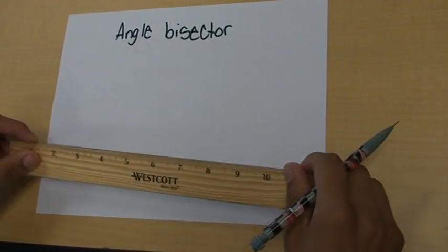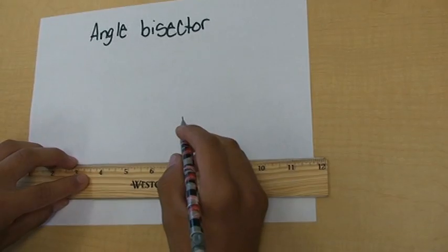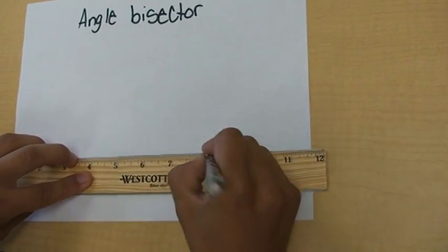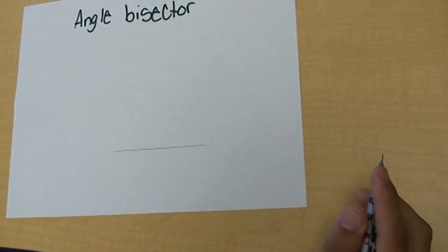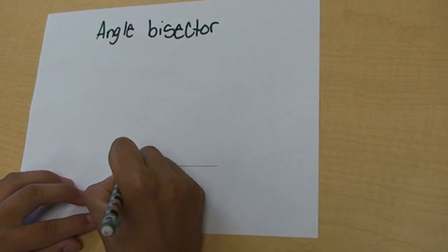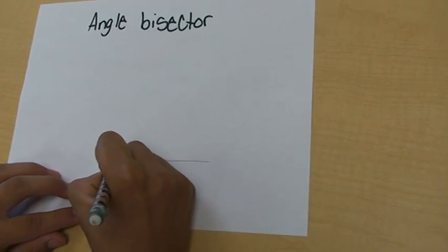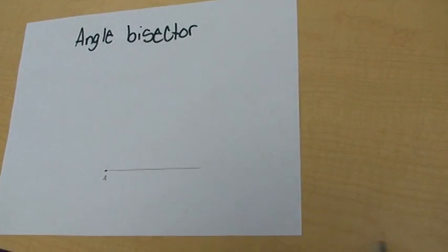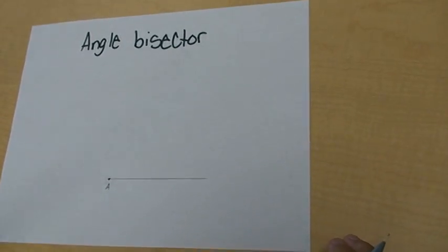First, draw a line. Label the left point A. Then draw a second line that makes an angle.